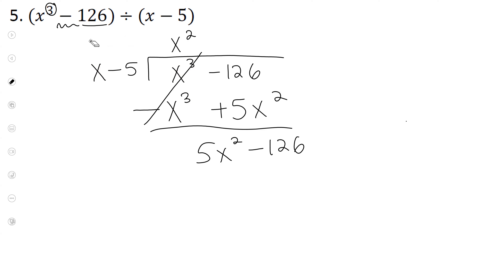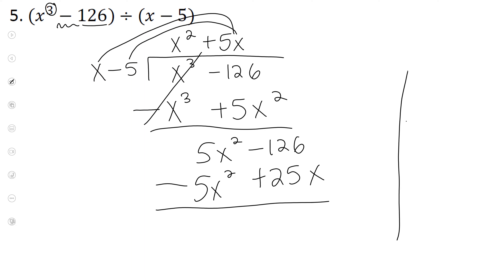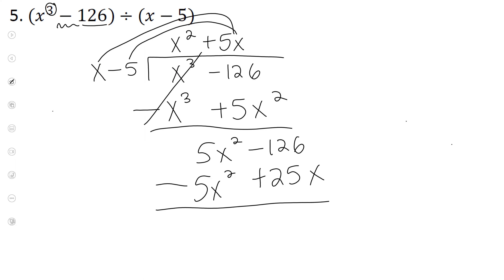Now let's start again. x times what will give you 5x squared? 5x. Perfect. Everyone write plus 5x up here at the top. Now let's multiply: x times 5x is 5x squared. Negative 5 times 5x is negative 25x. Change the signs. 5x squared minus 5x squared cancels out. Can we combine these? No, we can't — they're not like terms. So just bring everything down: 25x and minus 126.